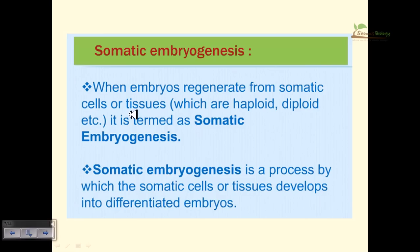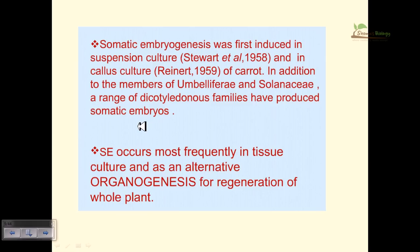When embryos regenerate from somatic cells or tissues — which can be haploid or diploid — it is termed somatic embryogenesis. Somatic embryogenesis was first induced in suspension culture, where plant cells suspended in liquid medium divide and grow to produce a callus. The callus is then placed into rooting and shooting media, root and shoot emerge, and the plant is transferred to soil.